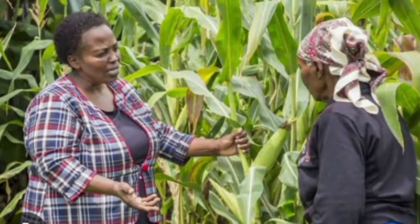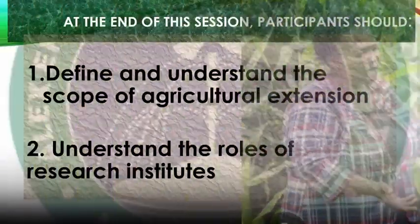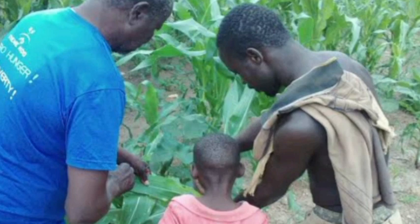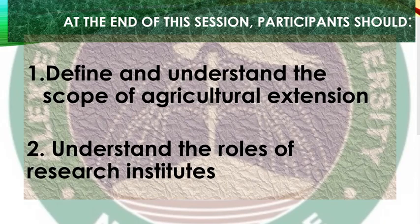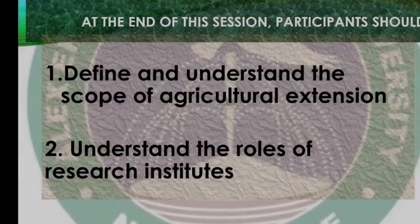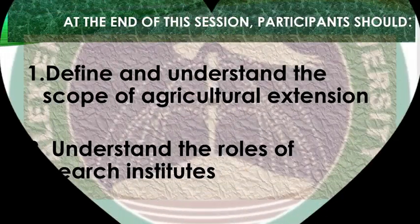This aspect is very critical for all of us. For instance, it is extension that enables the flow of information and transfer of knowledge and scientific findings, transforming them into practices. Extension is needed to encourage the adoption of these things. The session goals are that each participant should be able to define and understand the scope of agricultural extension.